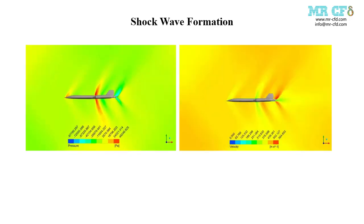The pressure and velocity contours clearly illustrate the formation of shock waves around the aircraft. The bow shock at the nose is particularly prominent, and oblique shocks can be observed emanating from the leading edges and other sharp features of the aircraft. These shock waves are crucial in understanding the drag and heat generation in supersonic flight.